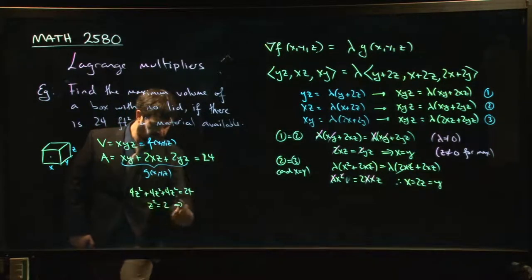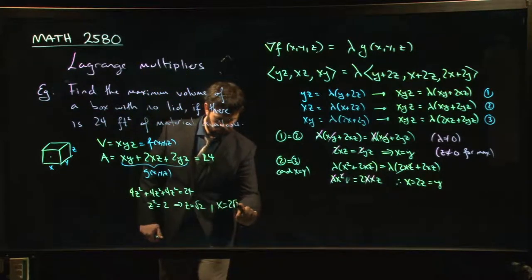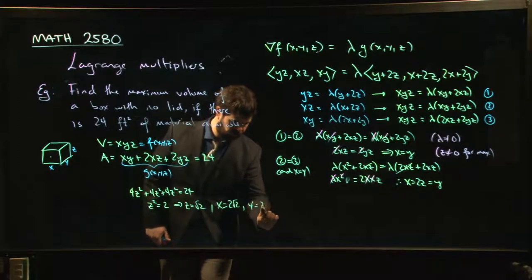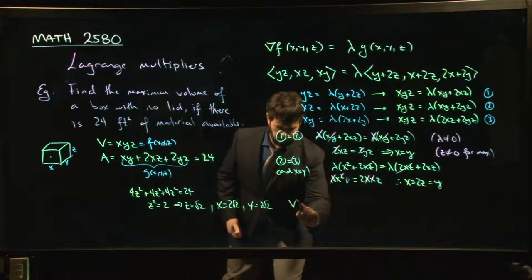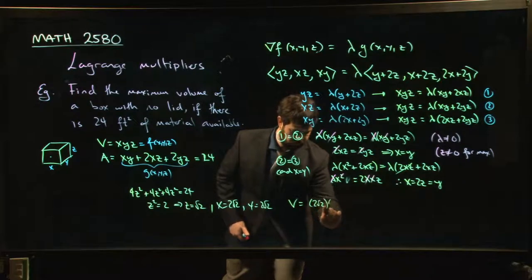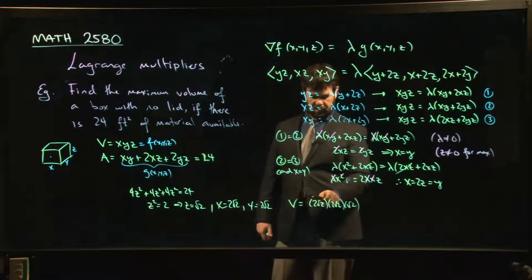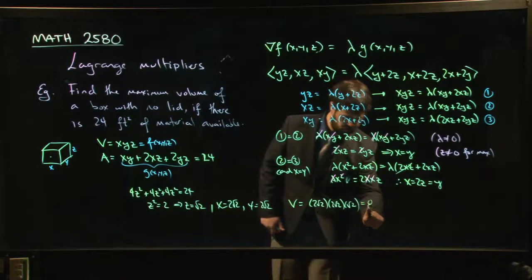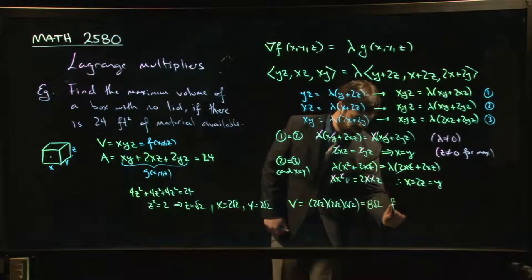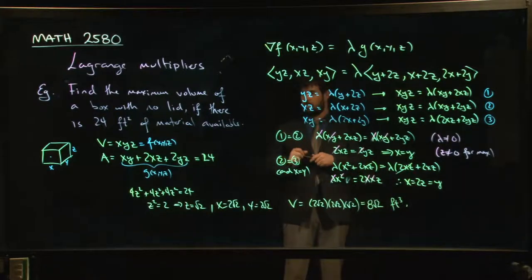And that means that x must be 2 root 2. y is equal to x. So y is equal to 2 root 2. And what's my volume? My volume is going to be 2 root 2 times 2 root 2 times root 2, which is going to be, let's see, 2 times 2 times 2, that's 8 times one more root 2, 8 root 2. And I guess I was working in imperial units for some reason. So 8 root 2 cubic feet gives me the answer.